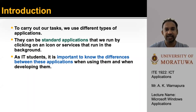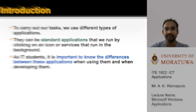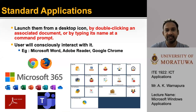Introduction. To carry out tasks, we use different types of applications. They can be standard applications that we run by clicking on an icon, or a service that runs in the background of the operating system. As IT students, it is important to know the differences between these applications when using them and when deploying them. Usually, standard applications are launched from a desktop icon, by double-clicking an associated document, or by typing its name at the command prompt. The user will consciously interact with it.